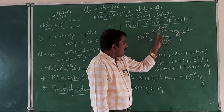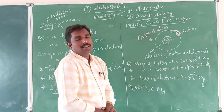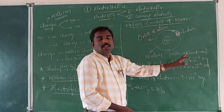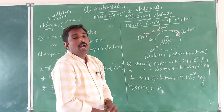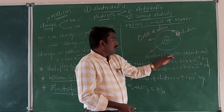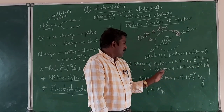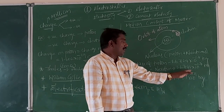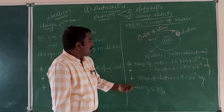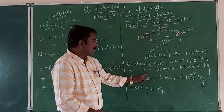The nucleus contains the total mass and charge concentrated at the center of the atom. The nucleus consists of protons and neutrons, which together are called nucleons. The mass of a proton is approximately 1.6724 × 10⁻²⁷ kg and the mass of a neutron is approximately 1.6748 × 10⁻²⁷ kg — both are nearly equal, but the mass of the proton is slightly less than that of the neutron.